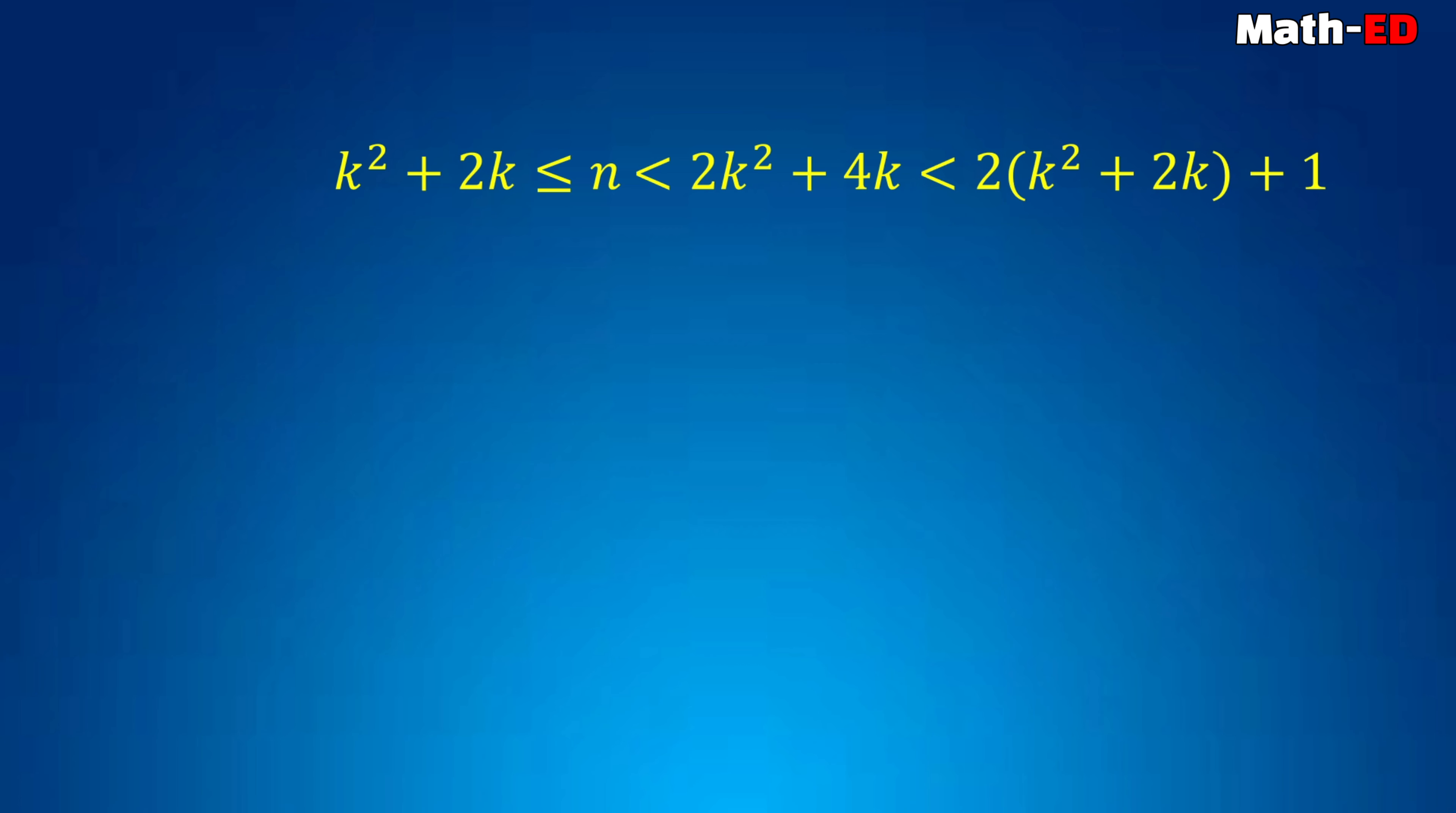Now, if we add 1 on both sides, then we get k squared plus 2k plus 1 is less than or equal to n plus 1, which is again less than 2 times k squared plus 2k plus 1. So we get that k plus 1 whole square is less than or equal to n plus 1, that is less than 2k plus 1 whole square.